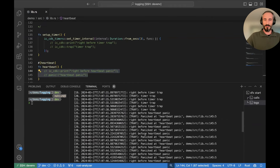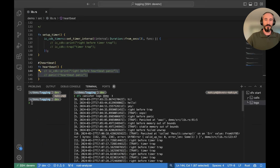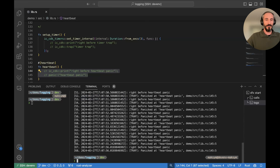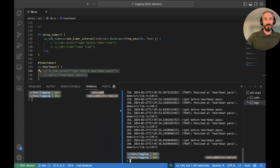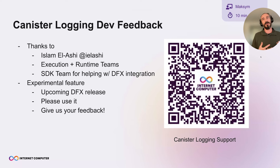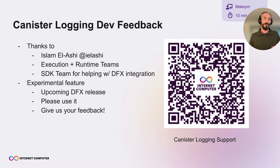Let me stop pulling the logs and scroll through the complete canister log history from this presentation. I have all the logs starting from the beginning — 'hi', 'hello' — all the way through the trap and panic examples, then the timer trapping and heartbeat panicking. Every log entry has an index and a timestamp. That's basically all the examples I wanted to show. Thank you to Islam for designing the feature, the execution and runtime teams for reviews, and the SDK team for help with the DFX integration. This is an experimental feature coming in an upcoming DFX release — please use it and give us your feedback.